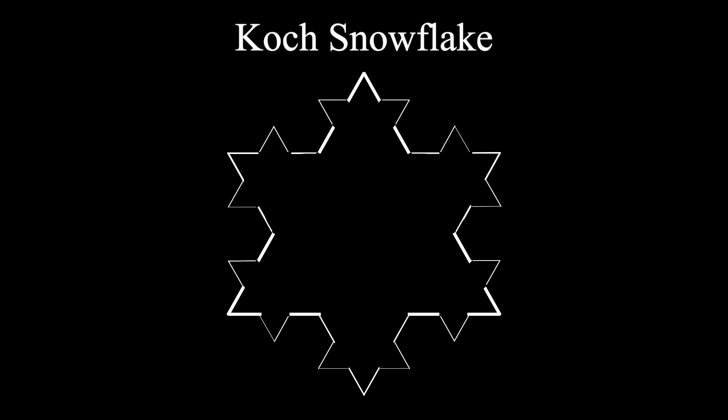Take each side, break it up into three equal segments, draw an equilateral triangle on top of the middle segment, then remove that middle segment. This is what's known as the Koch snowflake, and it's one of the earliest fractals to have been described.